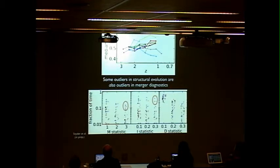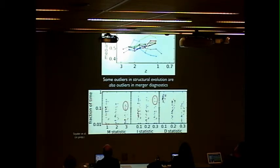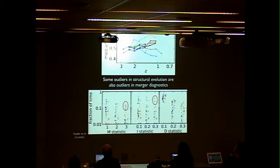This shows the median Gini coefficient as measured in mock HST images versus redshift. The blue and gray curves come out of the main locus of galaxies moving toward more compact or bulge-like structure, and some others also turn around at different times. What we found is that these outliers in structural evolution are also outliers in merger diagnostics. We went ahead and measured different diagnostics — the so-called MID statistics introduced by Mike Peth yesterday — which are designed to reproduce visual classifications of galaxies. The blue and gray points are outliers in the M and I statistics for the duration of time they're observed to have high values.